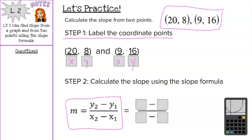However, we have two x's and two y's, so we need to label them so we know the difference between the x's and between the y's. So this pair is your first pair of coordinate points, so we just label it x1, y1. And then this is our second pair of coordinate points, so we label it x2, y2.